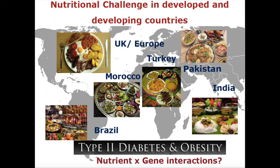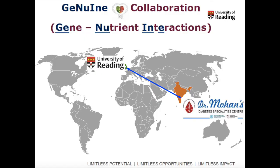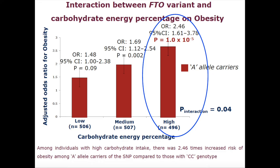I'm going to give an example of a study relevant for the Indian population, done in collaboration with Dr. Mohan's Diabetes Speciality Center in South India. We carried out a study on 2,000 individuals — a case-control study with 1,000 people with normal glucose tolerance and 1,000 with type 2 diabetes. Why are nutrigenetic studies so important for the Indian population? They have a different genetic makeup, unique and varying dietary patterns — for example, North Indian and South Indian diets are very different — and increasing prevalence of type 2 diabetes and obesity with no nutrigenetic studies to date.